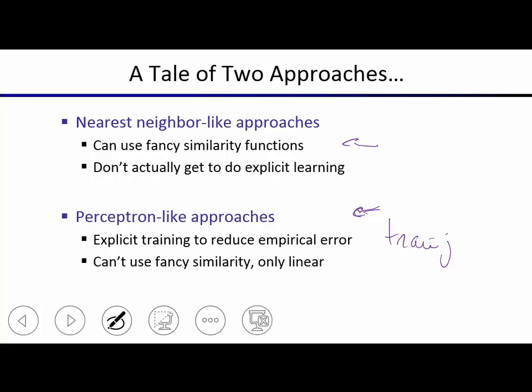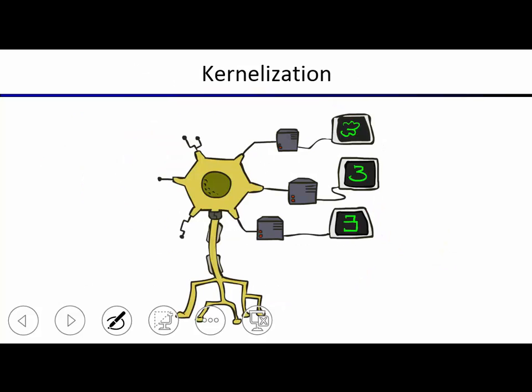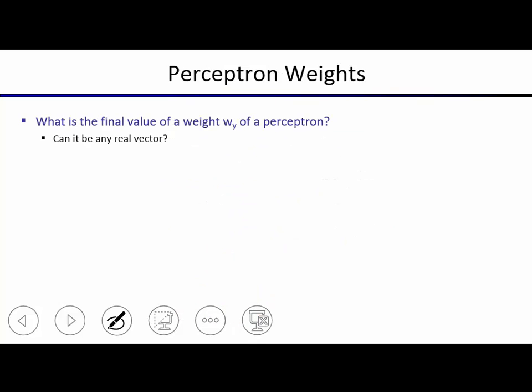What we're going to do for the remainder of this lecture is unify these two approaches into a single approach that does both. The trick is called kernelization. Let's revisit the perceptron and see how from there we can get to effectively a nearest-neighbor-like approach.